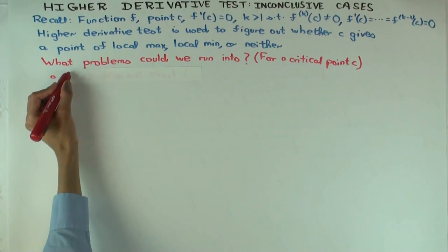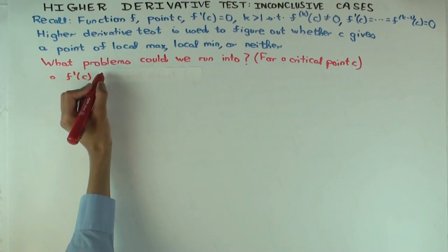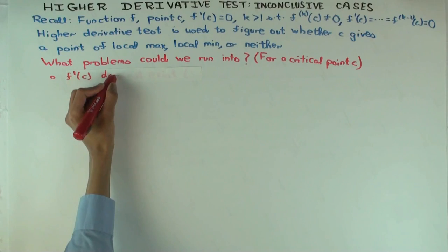Well, since you're starting with a critical point, the first type of problem is that the critical point is the wrong type of critical point. So what does that mean? The derivative does not exist, right?